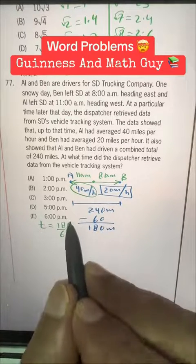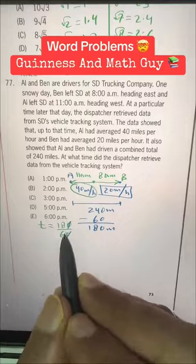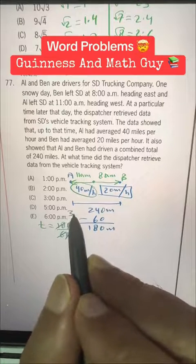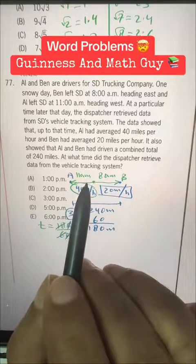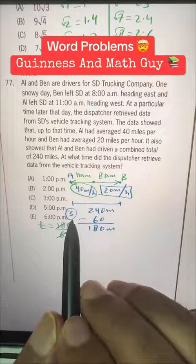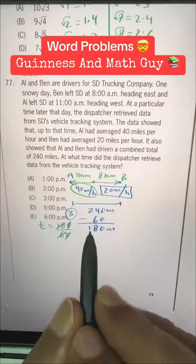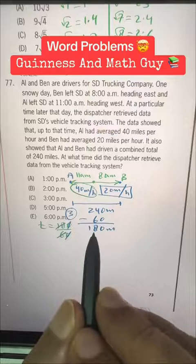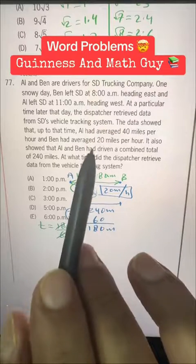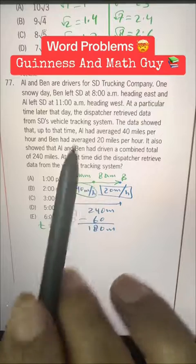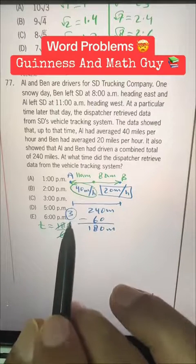Now here this 0 will go with this 0 and 6 times 3 is 18. After 11am, after 3 hours after 11am, they covered this distance 180 and that was the time when the dispatcher retrieved data.